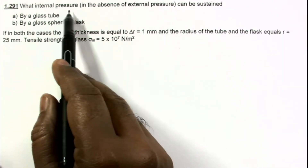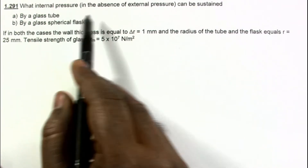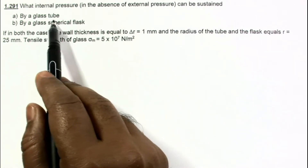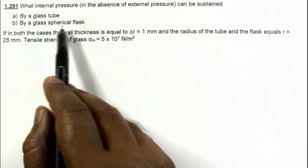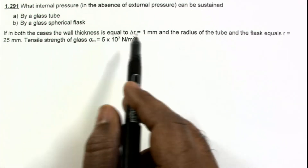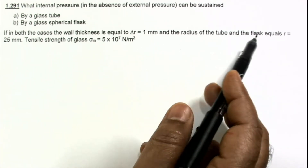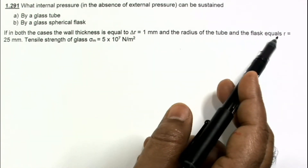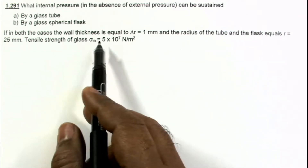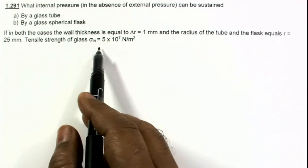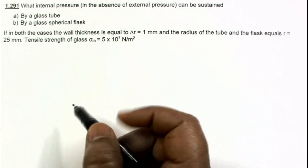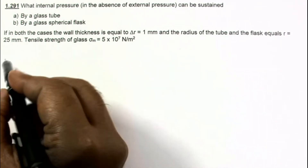In this problem, what internal pressure can be sustained by a glass tube and by a glass spherical flask, if in both cases the wall thickness is equal to delta r and radius of the tube and flask equals r. We are given the tensile strength of glass as sigma m, equal to 5 × 10⁷ Newton per meter square.